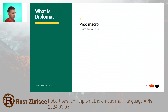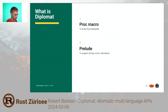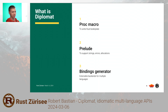Diplomat is made out of three parts. First, we have a proc macro to write all the boilerplate in Rust — all your extern C stuff. Then we have a prelude to have cross-language nice types, which includes things like strings, errors, allocations, logging, things like this. And then the binding generators: basically you go from your annotated Rust code to nice C++, JavaScript, Dart, you name it.